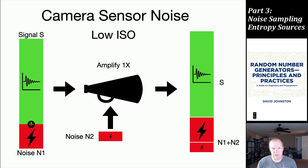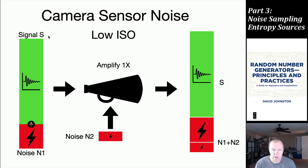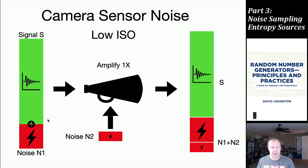The first one we're looking at is a camera sensor. A digital camera has an array of pixel sensors, and each one has light as its input — that's the signal S. In addition, there's some noise integral to the sensor, N1. There's some signal from the light and some noise added together, so you get a slightly noisy signal. The more light you get, the better, because then you have more signal than noise.